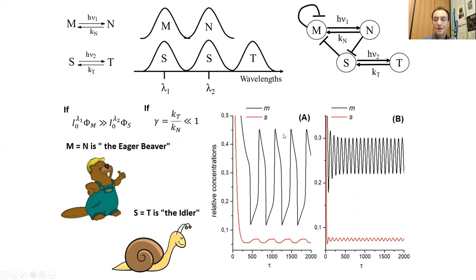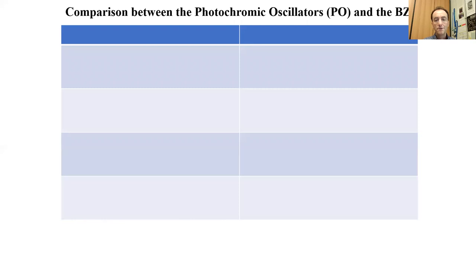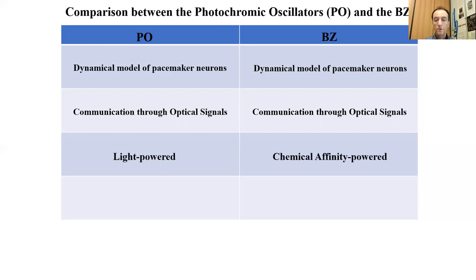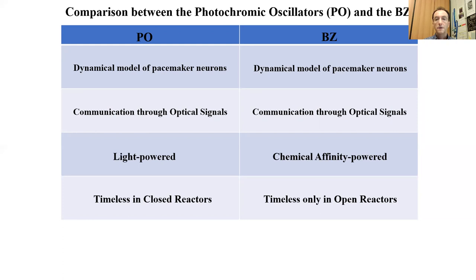It's worthwhile comparing the features of the photochromic oscillator with those of the Belousov-Zhabotinsky reaction. Both are dynamical models of pacemaker neurons; both communicate through optical signals. The photochromic oscillator is light-powered — as soon as we switch off the light, the oscillations cease. The BZ reaction is powered by chemical affinity — as soon as the system reaches chemical equilibrium, the oscillations stop. Whereas the photochromic oscillator can be timeless in a closed reactor, the BZ reaction can be timeless only in an open reactor. The photochromic oscillator is really appealing but not easy to implement.